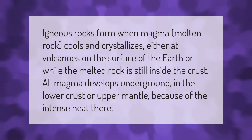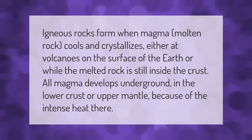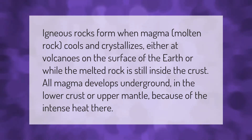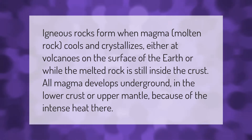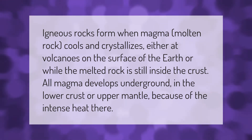Igneous rocks form when magma — molten rock — cools and crystallizes, either at volcanoes on the surface of the earth or while the melted rock is still inside the crust. All magma develops underground in the lower crust or upper mantle because of the intense heat there.